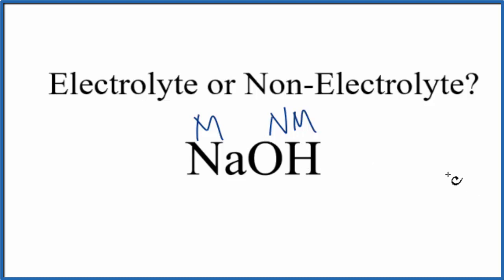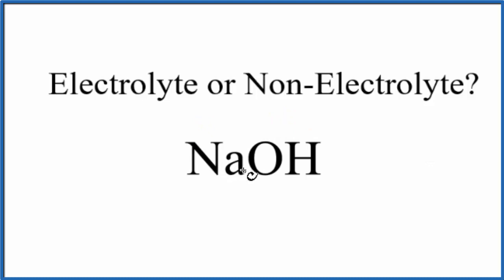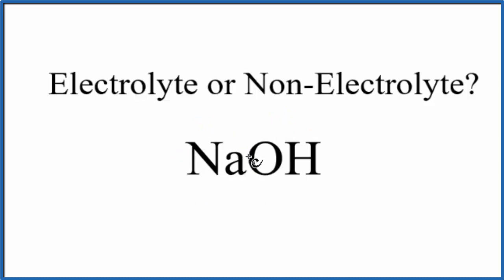And soluble ionic compounds are going to be electrolytes. If you know your solubility rules, compounds with sodium in them are very soluble. So this is going to dissolve and break up into its ions when it's put in water.